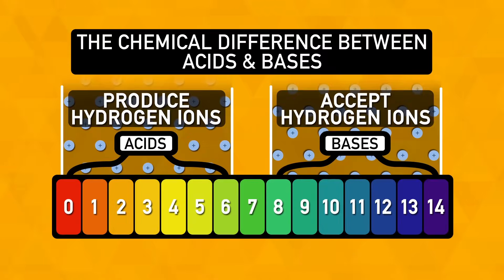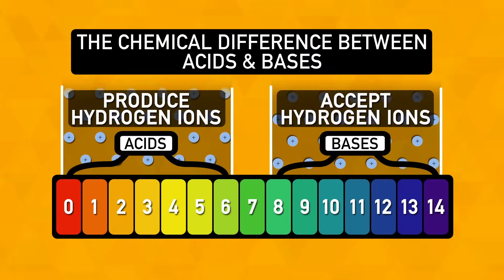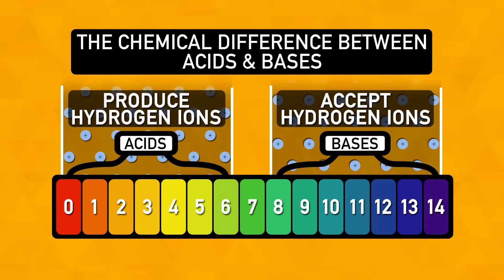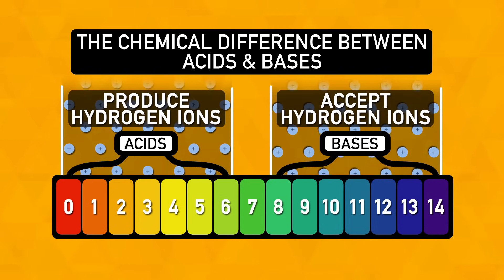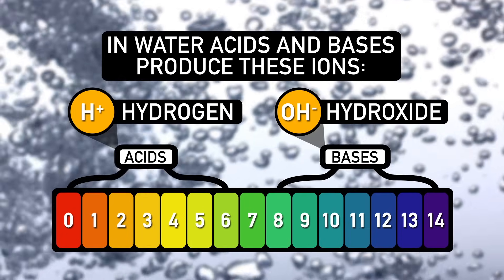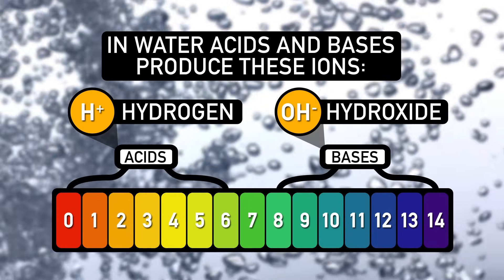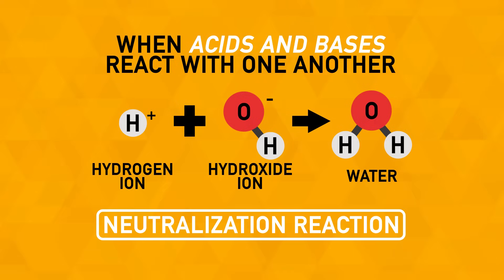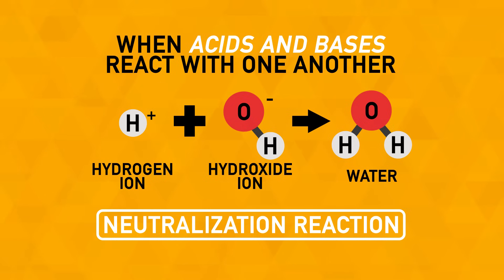Chemically, the difference between acids and bases is that acids produce hydrogen ions and bases accept them. In water, acids produce H+ ions and bases produce OH- ions. In reactions between acids and bases, hydrogen ions will react with hydroxide ions to make water. This type of chemical reaction is called a neutralization reaction.